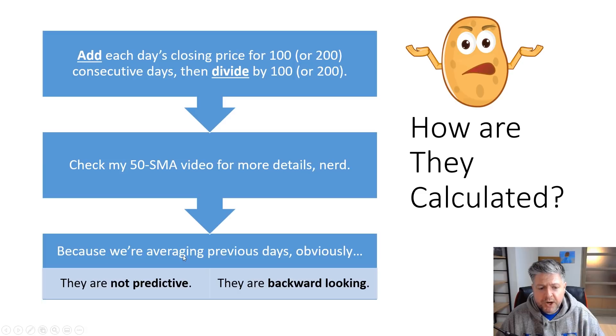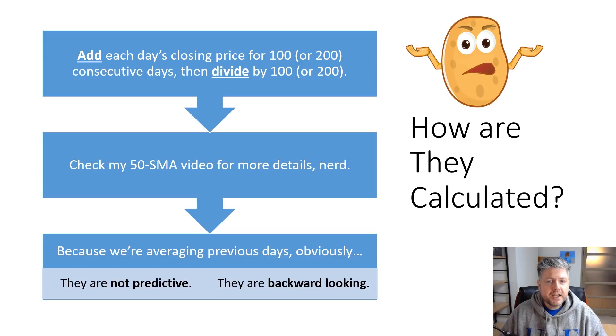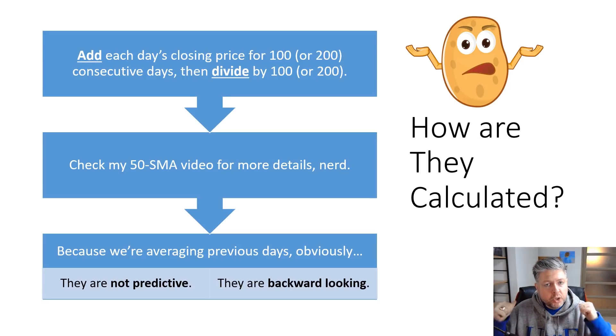Because we're averaging previous days, obviously SMAs are not predictive of the future. Instead, they're just backward-looking — they're looking at what's already happened.